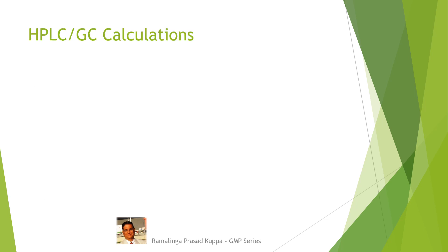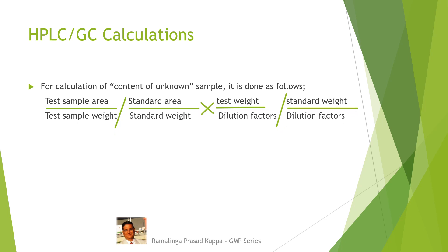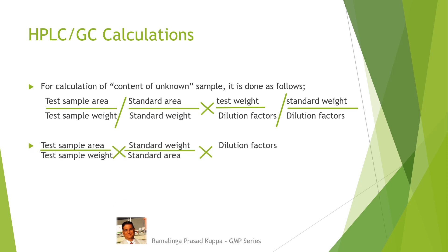Let us see how HPLC and GC calculations are done in brief. For calculation of content of an unknown sample: test sample area divided by test sample weight, divided by standard area divided by standard weight, multiplied by test weight and dilution factors. For impurity determination, it is calculated as the ratio of sample area per unit concentration against ratio of standard area per unit concentration. When you have the multiplication mark, the ratio will be reversed — the same concept applies to sample and standard dilutions.